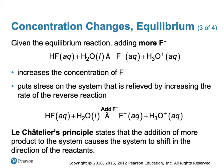Now let's look at what happens on the product side. If we add more F⁻ — increasing the concentration of the products — this puts stress on the system, and that stress will be relieved by increasing the rate of the reverse reaction. We are going to shift to form more reactants.